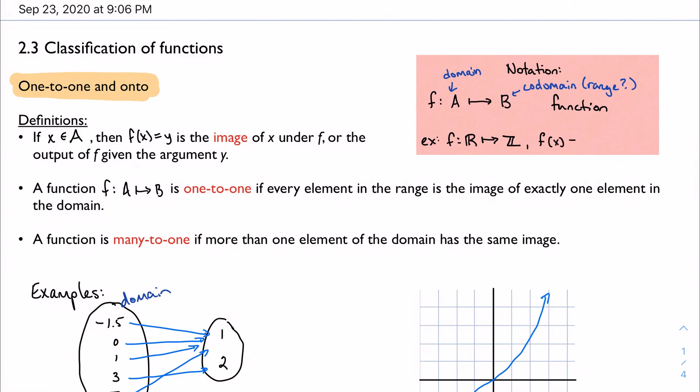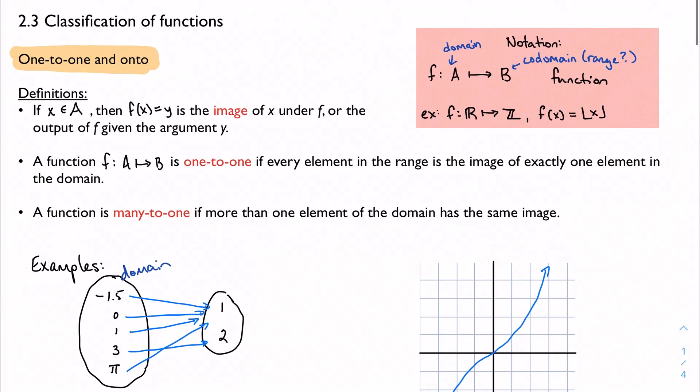And then I'm going to define my function. So maybe my function is, this is not necessarily the case, but I define my function however. Maybe it's like the floor function, where I take the greatest integer less than or equal to my number. That would be a way to define that function. You're going to see this notation throughout.